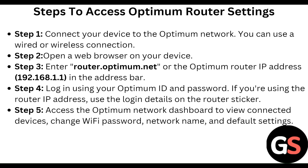Login using your Optimum ID and password. If you are using the router IP address, use the login details found on the router sticker. Then access the Optimum network dashboard to view connected devices, and change the Wi-Fi password, network name, and default settings.